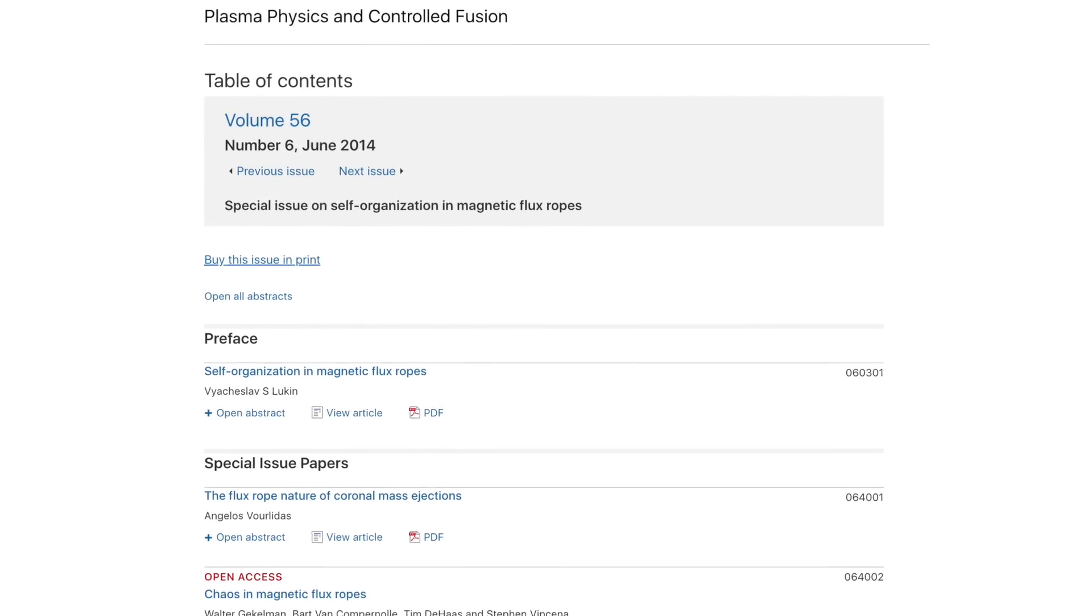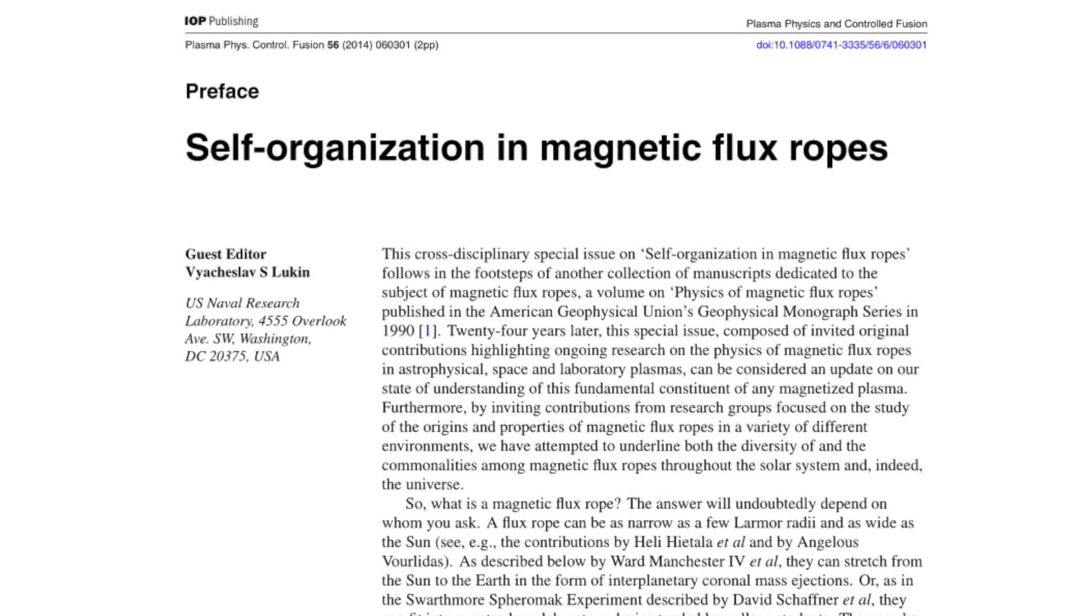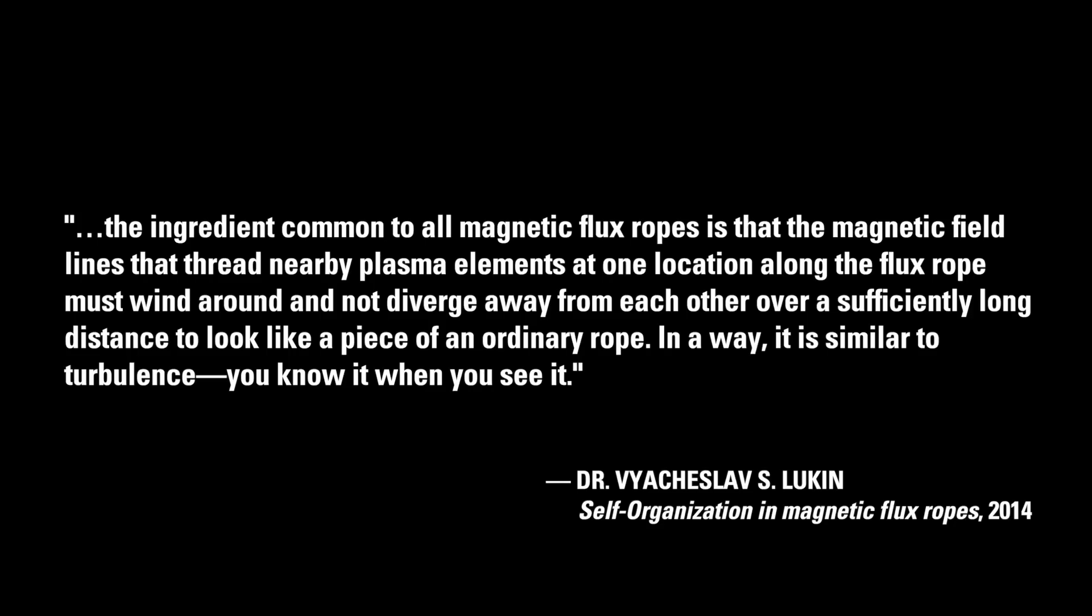In 2014, the journal Plasma Physics and Controlled Fusion published a cross-disciplinary special issue on self-organization in magnetic flux ropes. The guest editor, V.S. Lucan, then of the U.S. Naval Observatory, and subsequently a program head at the National Science Foundation, wrote, and I quote, The ingredient common to all magnetic flux ropes is that the magnetic field lines that thread nearby plasma elements at one location along the flux rope must wind around and not diverge away from each other over a sufficiently long distance to look like a piece of ordinary rope. In a way, it is similar to turbulence. You know it when you see it. End of quote.